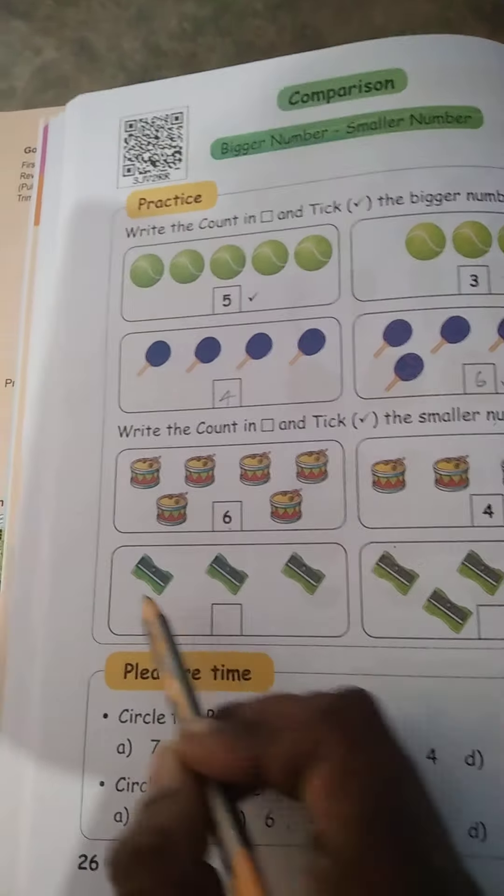And tick the 4. Next, count the short mark: 1, 2, 3. 3. Next: 1, 2, 3, 4, 5. Put 5 in the box. Which is smaller? 3 or 5? Yes, 3 is smaller.